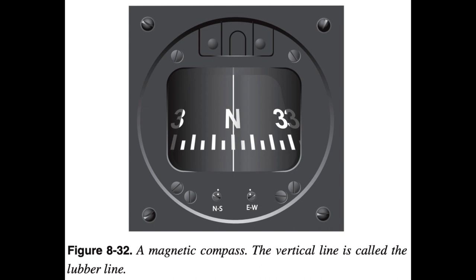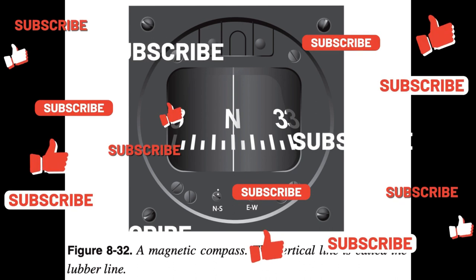When the pilot is flying north, as the compass indicates, east is to the pilot's right. On the card, 33, which represents 330 degrees west of north, is to the right of north. The reason for this apparent backward graduation is that the card remains stationary and the compass housing and the pilot rotate around it. Because of this setup, the magnetic compass can be confusing to read.